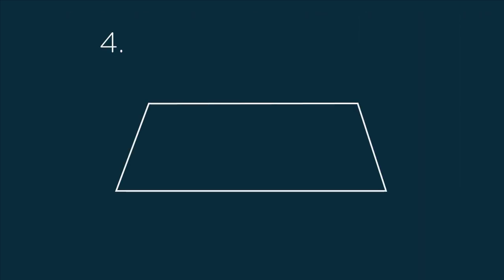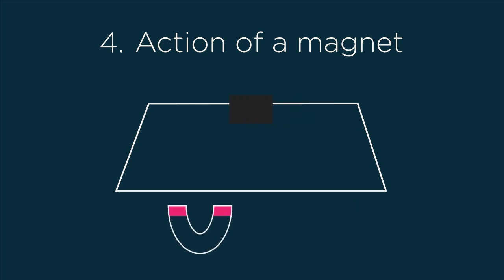Test 4: Action of a magnet. As the magnet is moved underneath the paper, you will see that all the iron 2 sulfide is attracted. There is no separation.